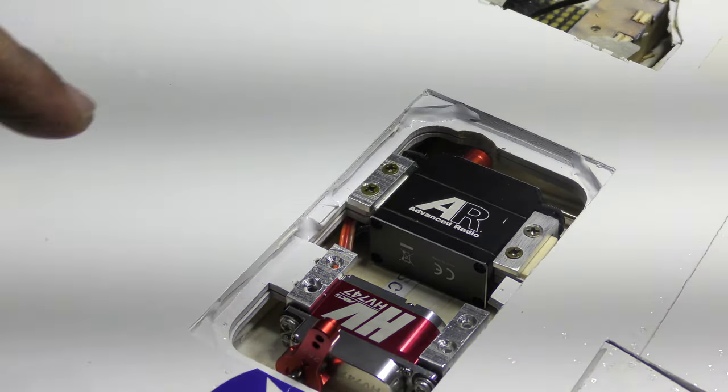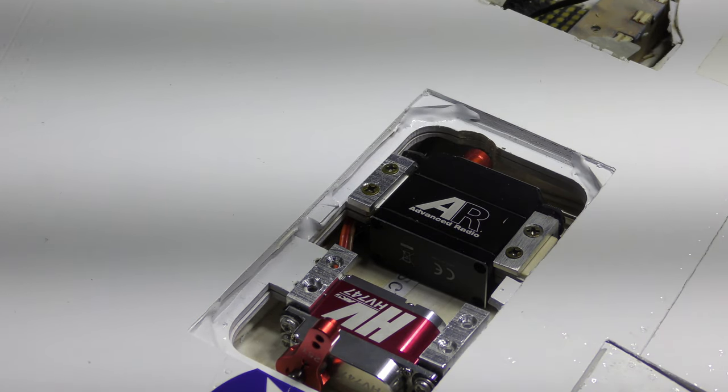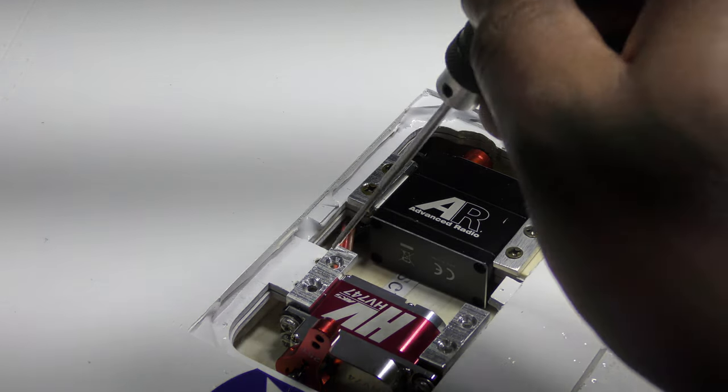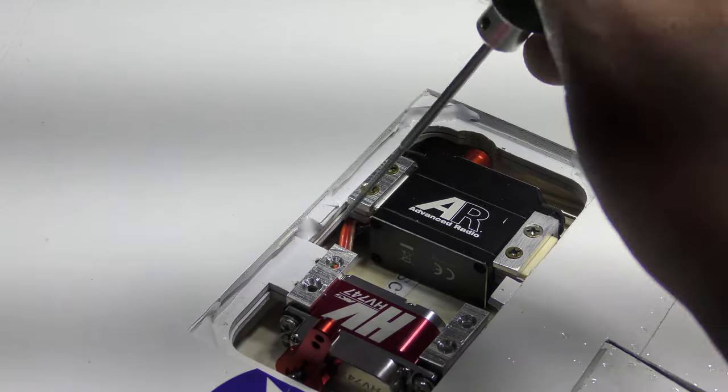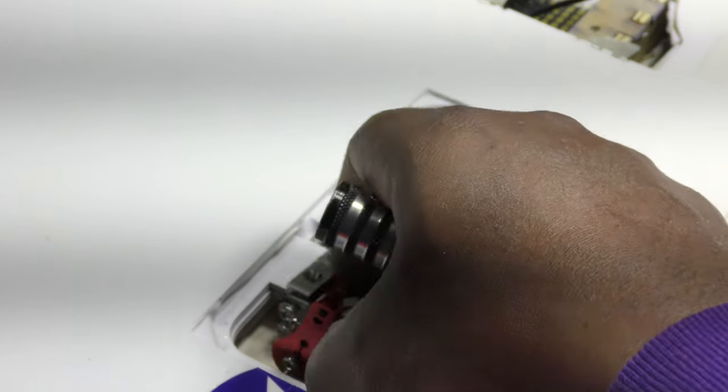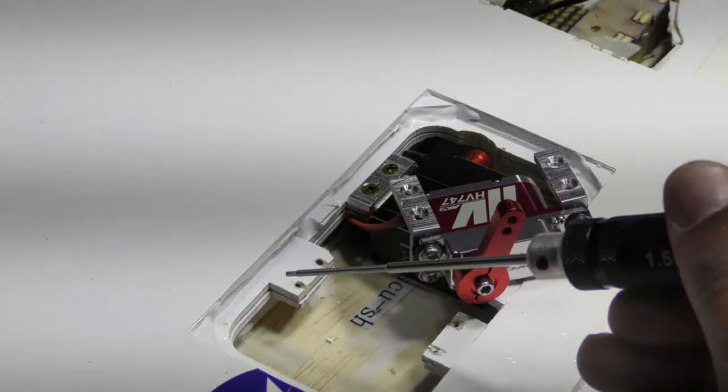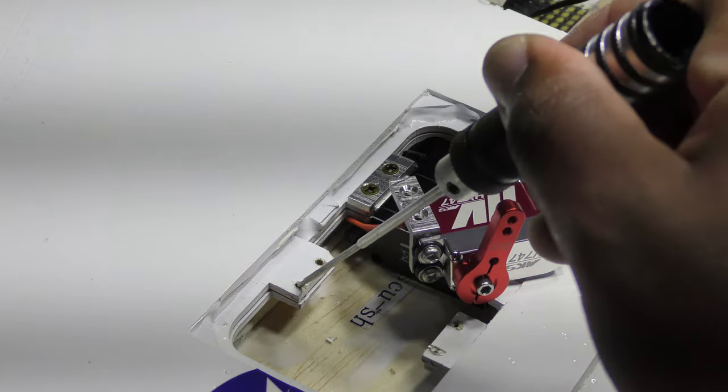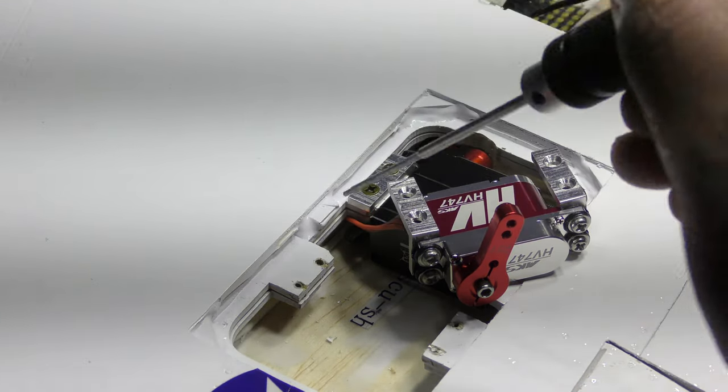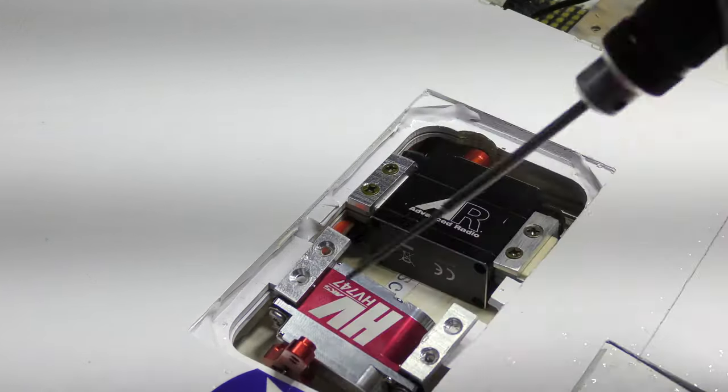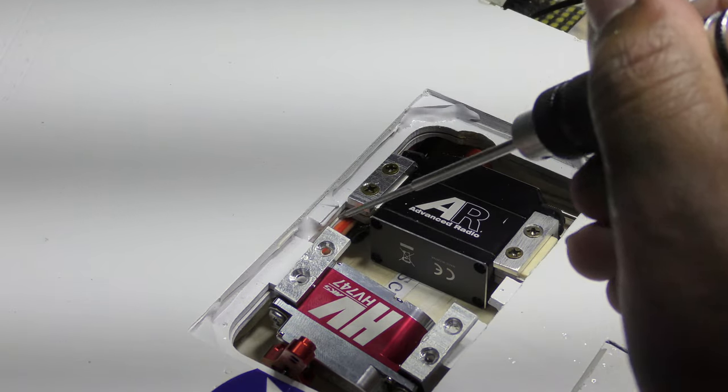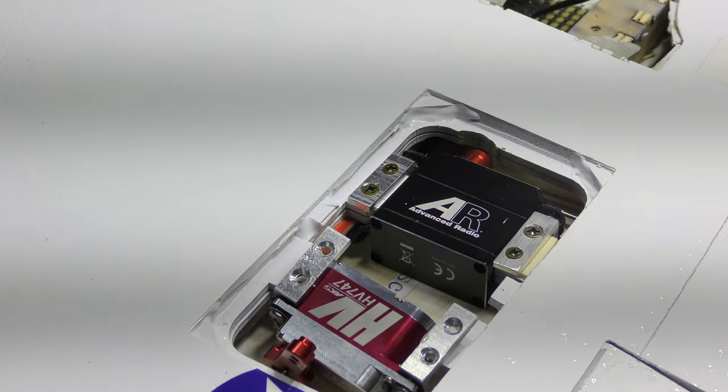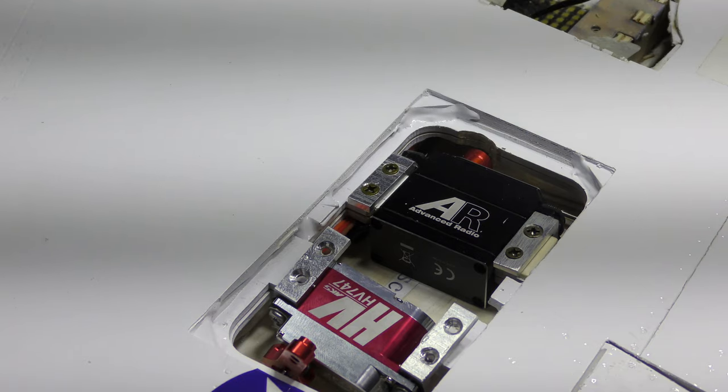So instead of going straight down, they went just a little bit this way because as you can see it's quite on the edge. So I drill them in at an angle so they go in this way, and luckily because I have the countersunk, I just countersunk it a little bit more. The screws seem like they sit there just fine.